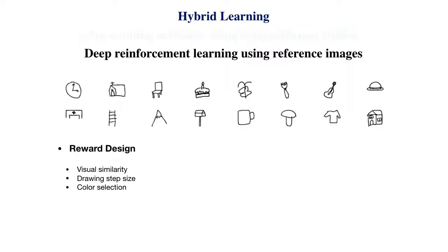The second step is to apply deep reinforcement learning for doodling. In this step, we use Google Draw Dataset as the reference images. The reward has three components: similarity between the current canvas and the reference image, drawing step size to avoid slow movement or pixel-by-pixel printing, and correct color selection.